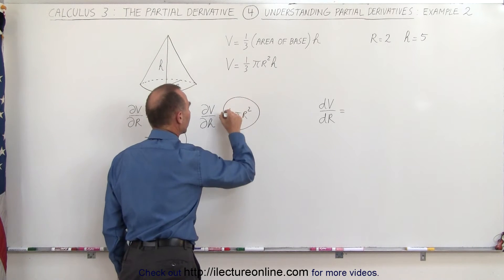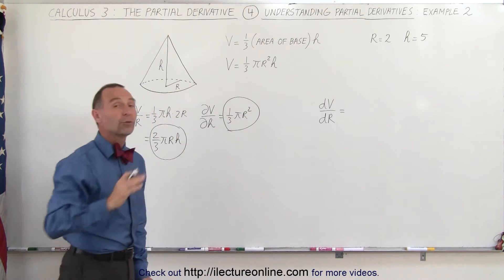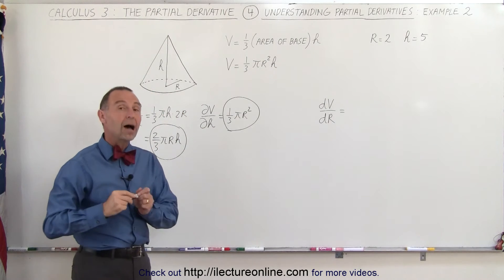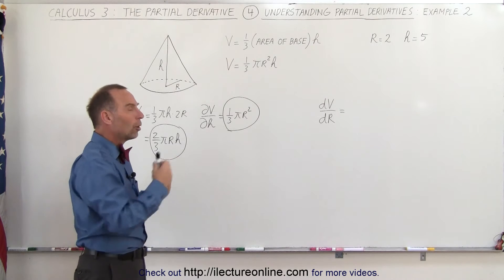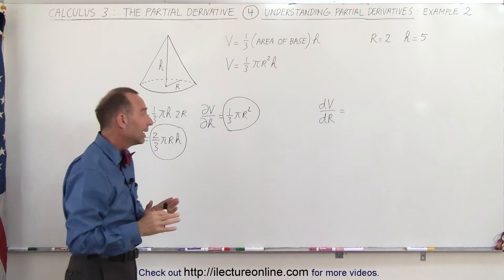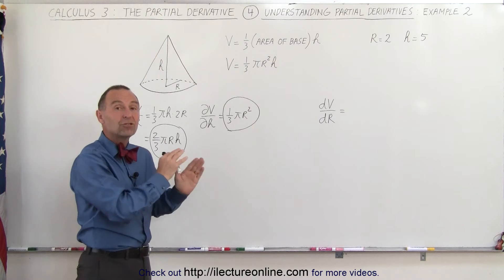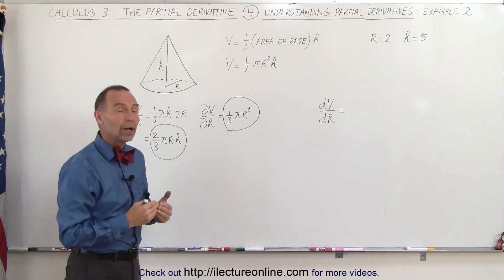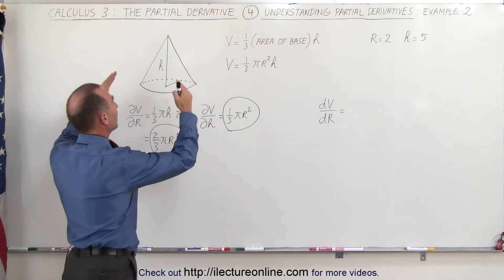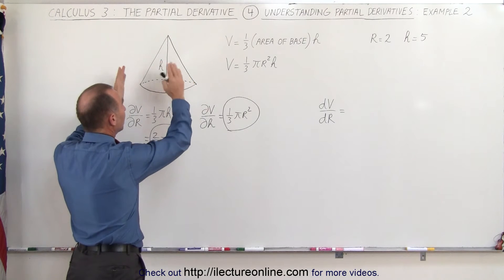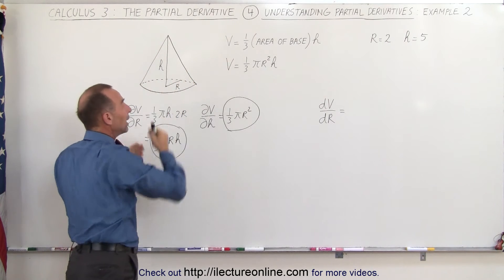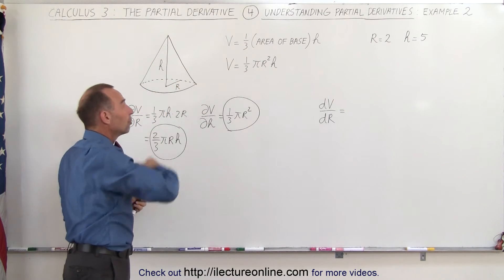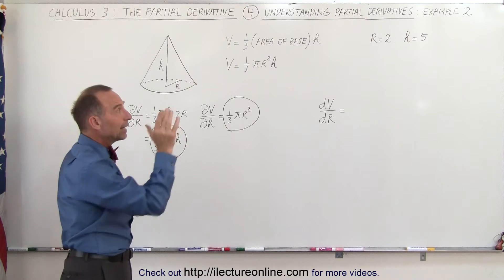Let's go ahead and circle that. Now we're going to take the regular derivative of the volume with respect to r — we want to see how the volume changes when r changes. The difference here is that we're not going to keep h constant, because if r changes, h will change as well. Presumably, if the ratio of the height to the radius remains the same, then as r changes, h will change proportionally.